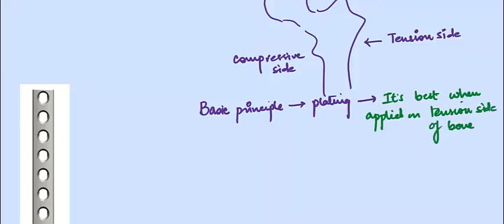Why is the plate best when applied on the tension side? If you block this tension side, the plate — normally called a compression plate — when applied on the tension side of the bone, it behaves as a tension band. What this does is it behaves as a compression force on that surface.